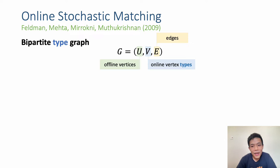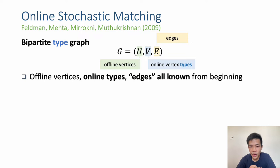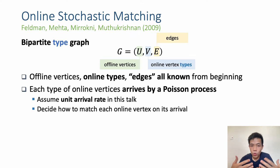Let me start by introducing the model called Online Stochastic Matching, introduced by Feldman, Meta, Miracle, and Mutu in 2009, which is a generalization of the classic Online Bipartite Matching model by Karp, Vasirani, and Vasirani. In this problem, we're given a bipartite type graph where the left-hand side, denoted U, are the offline vertices, and the right-hand side, denoted V, are the online vertex types, with edges connecting them. This type graph is known to the algorithm from the beginning. Each type of online vertex is realized by a Poisson process with time horizon between 0 and 1, and for simplicity we assume arrival rate 1, though the paper considers general arrival rates.